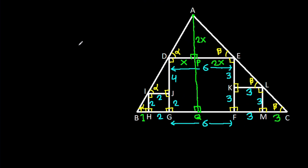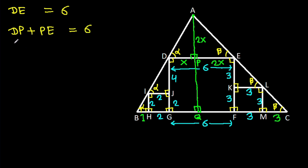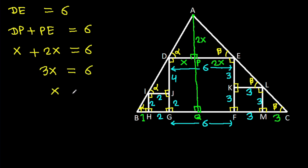Now we have DE = 6, which equals DP + PE = x + 2x = 3x = 6. So x = 2.